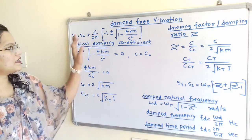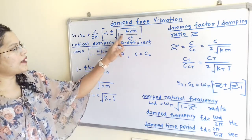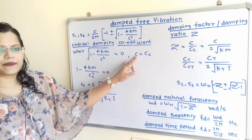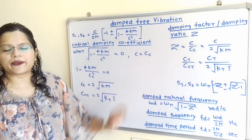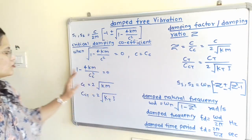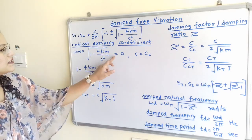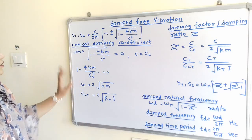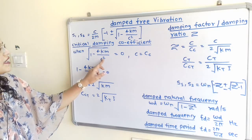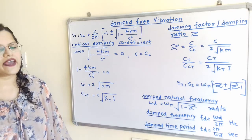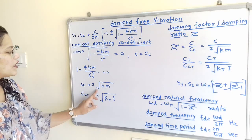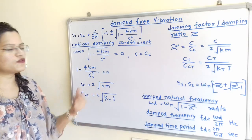In the solution S1 and S2, there is the term √(1 − 4KM/C²). When this term equals zero, the damping coefficient C equals the critical damping coefficient Cc. Setting √(1 − 4KM/Cc²) = 0 gives 1 − 4KM/Cc² = 0. Simplifying, Cc equals 2√(KM). This is the formula for the critical damping coefficient for a linear system.